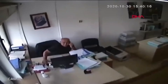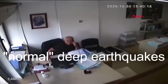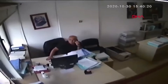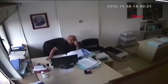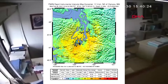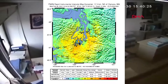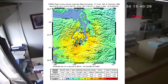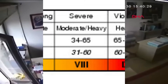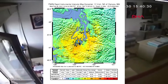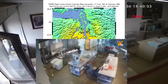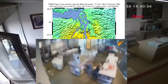But before we get to that, let's talk about the normal deep earthquakes. In 2001, the U.S. Pacific Northwest was struck by a magnitude 6.8 earthquake. This earthquake had a maximum Mercalli reading of 8, or severe, and a maximum acceleration of 0.3 g. Damaging, but it could be way worse.